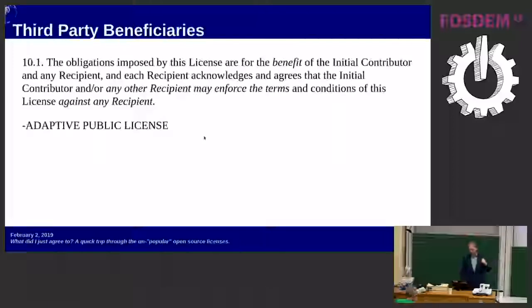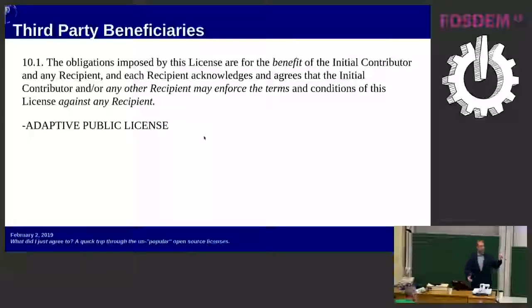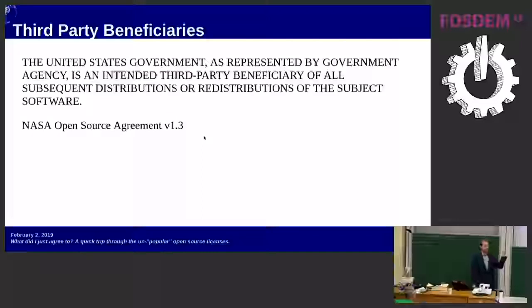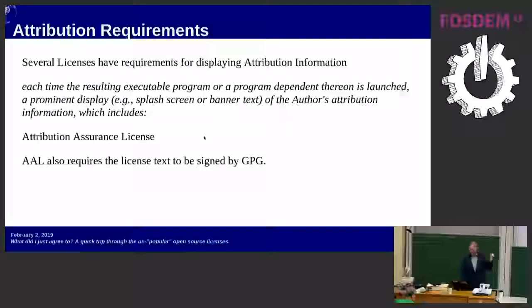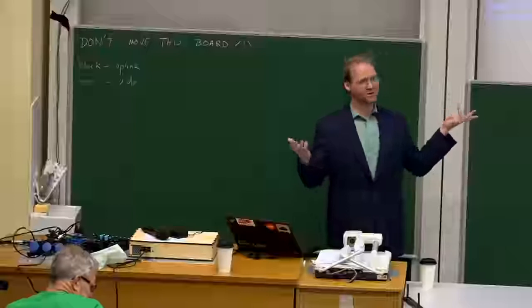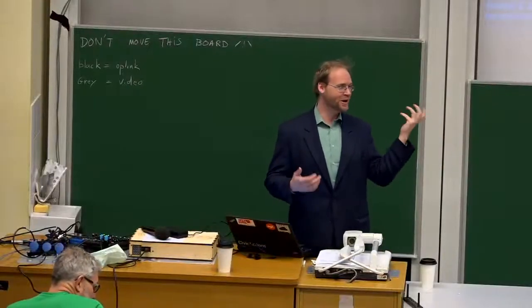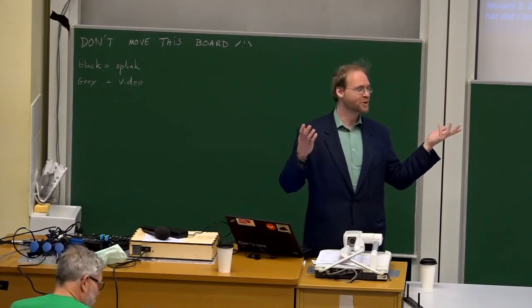There are other interesting things too. Third-party beneficiaries aren't typically a thing in open source licenses — usually only the copyright holder can sue to enforce. But under the Adaptive Public License, any recipient of the software can sue any other recipient. Under the NASA Open Source Agreement, the United States government is allowed to sue you. And if you like jury trials, don't use the Eclipse Public License version 1 — you won't be having one. Some licenses also have unusual attribution requirements, like the Attribution Assurance License requiring you to sign with a GPG key. The overall point: when you're using open source licenses, read them — because you might be surprised at what you're agreeing to.